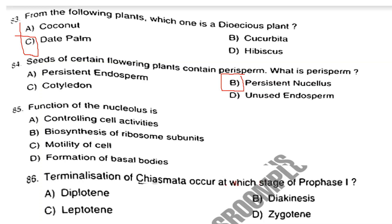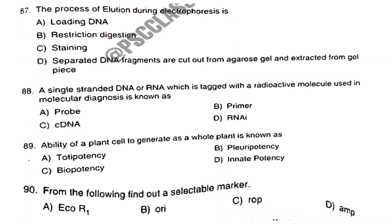Question number 85. Function of the nucleolus. Answer is Option B: Biosynthesis of ribosome subunits. Question number 86. Terminalization of chiasmata is a stage of which phase of prophase I? The answer is Option C: Leptotene. Question number 87. Process of elution during electrophoresis. Answer is Option D: Separated DNA fragments are cut out from agarose gel and extracted from the gel piece.